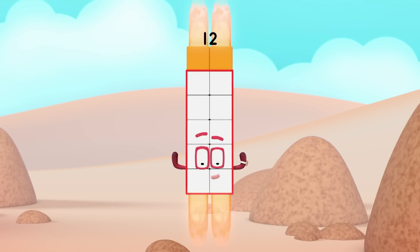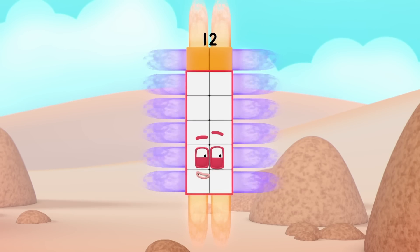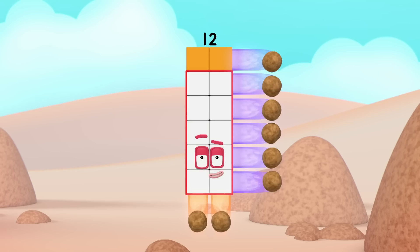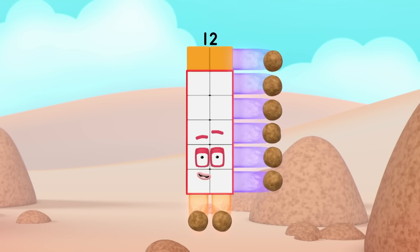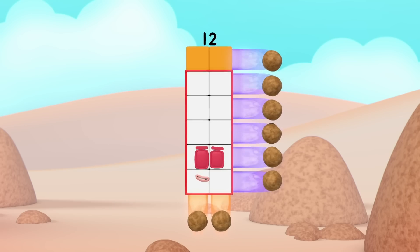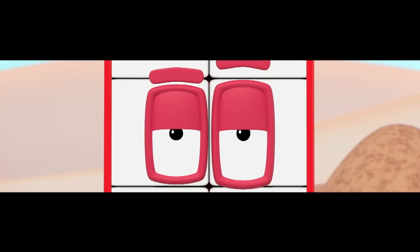Two by six! Two by six is another way. Two lots of six, do you hear what I say? Another rectangular array. So let's split without delay. Break away!